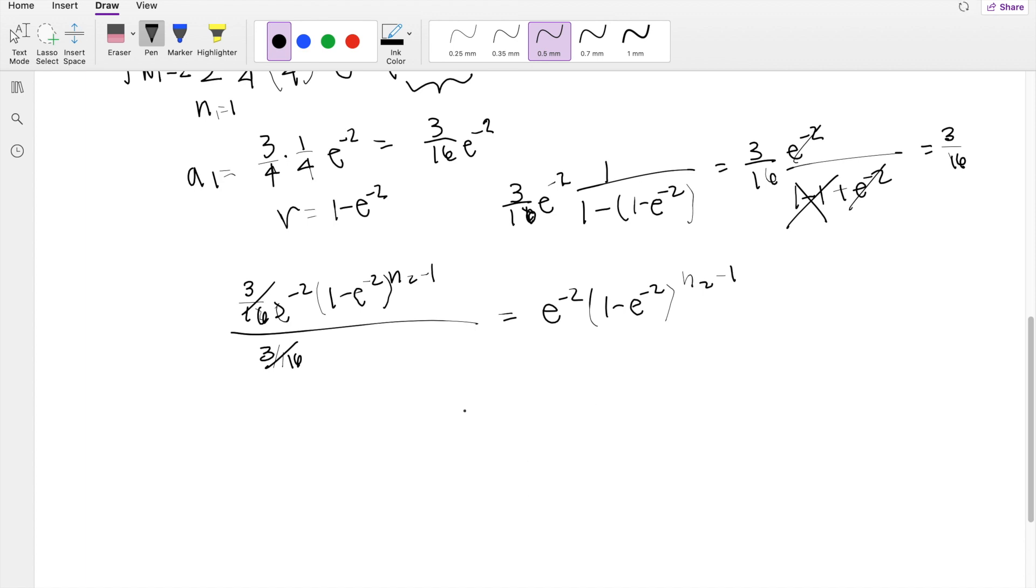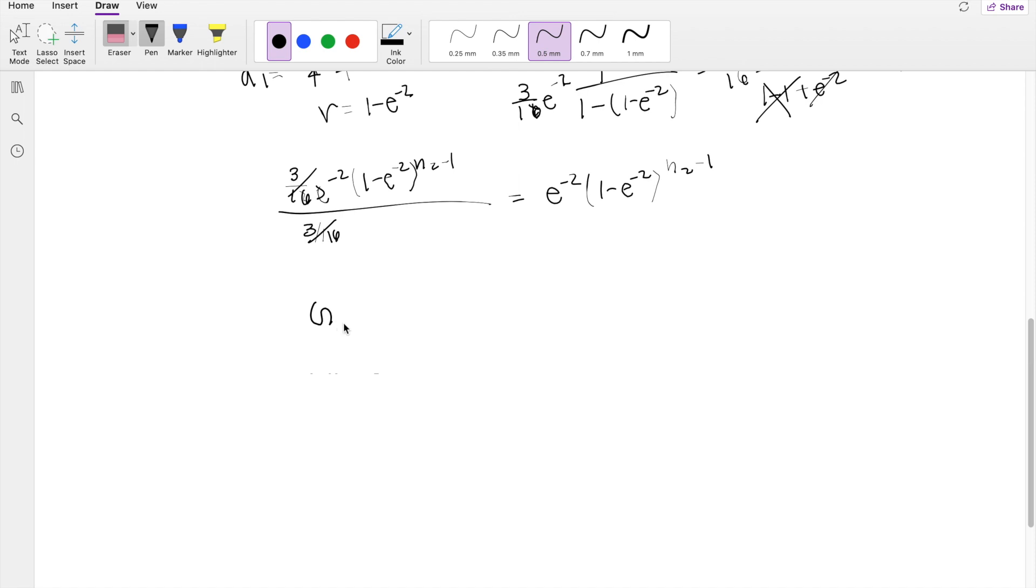And we recognize that this is a geometric distribution, as you may recall, our geometric distribution function, our probability distribution function for geometric looks like this, p of x, k is equal to 1 minus p to the k minus 1 times p.